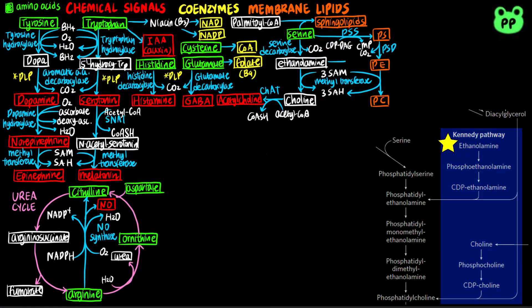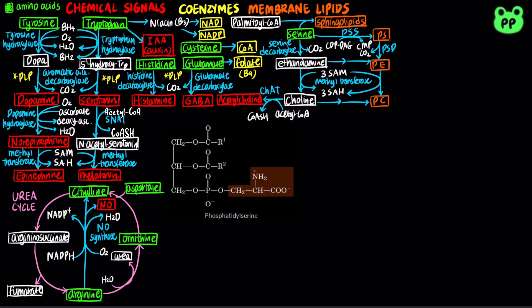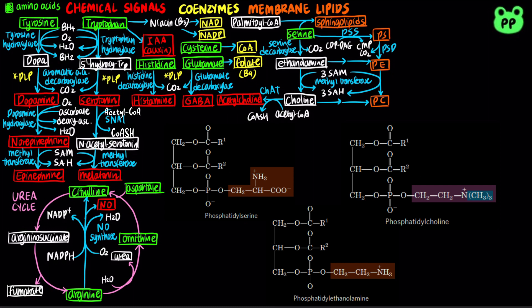Ethanolamine can also give rise to phosphatidylethanolamine, while choline can also give rise to phosphatidylcholine through the Kennedy pathway. Phosphatidylserine, phosphatidylethanolamine, and phosphatidylcholine are some of the phospholipids that make up our cell membrane. More details about membrane lipid biosynthesis will be covered in a future video.